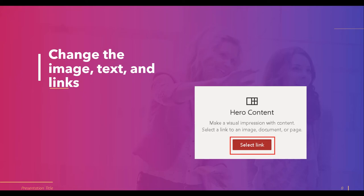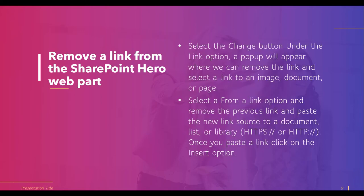We can easily select a link and change the image, text, and link of the Hero content Webpart, or we can click the Change button to change it. To remove the link from the SharePoint Online Hero Webpart, we can click the button under the link option, remove the link, and select a new link for the image or document. We can also choose the Select from a Link option, remove the previous link, and paste a new link so it will be updated.